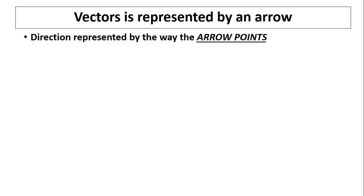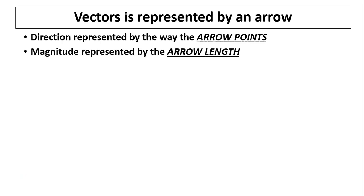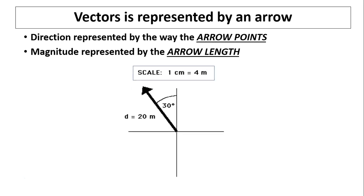A vector is represented by an arrow. The direction of the arrow indicates the direction of the vector, and the size of the arrow indicates its magnitude. For example, this arrow represents a displacement vector. The magnitude is 20 meters — using the scale where 1 centimeter equals 4 meters, the arrow length must be 5 centimeters, because 4 times 5 gives 20. The direction is 30 degrees, giving the full information about the displacement.